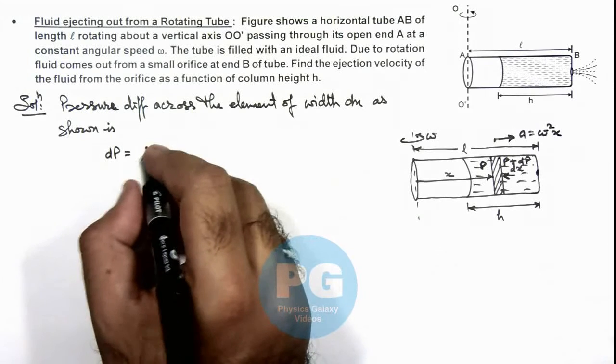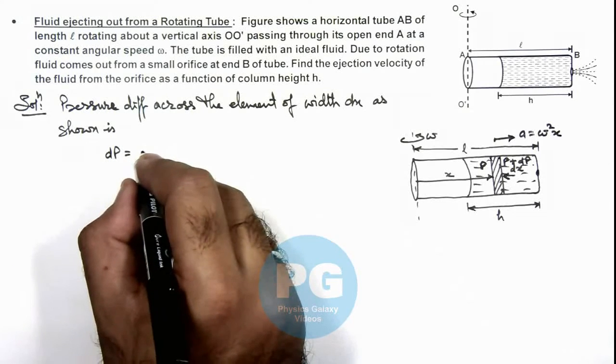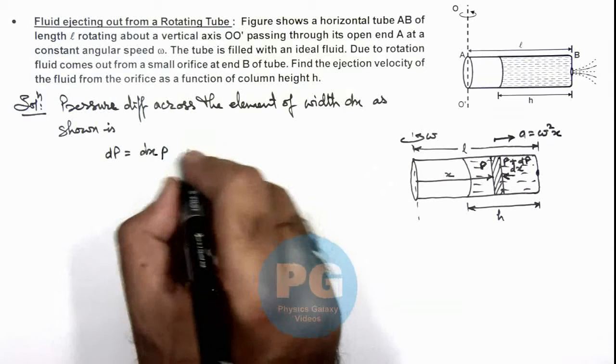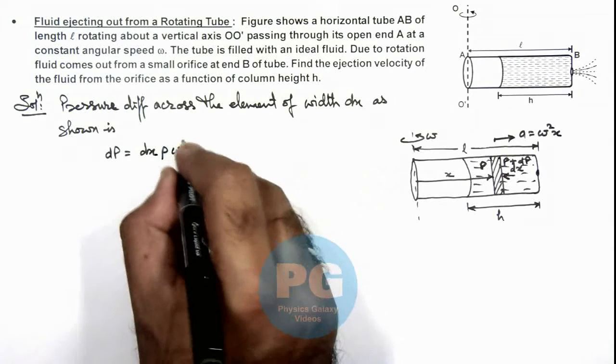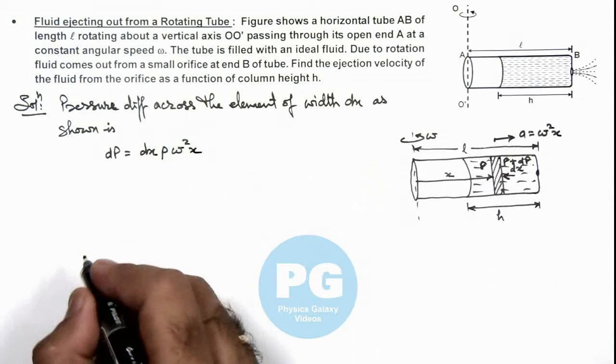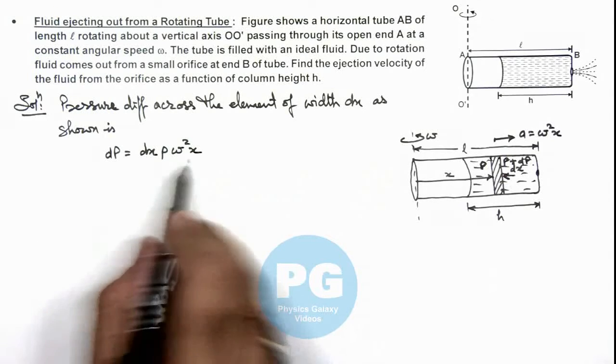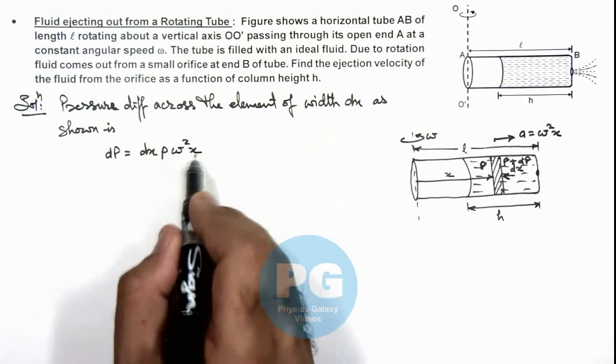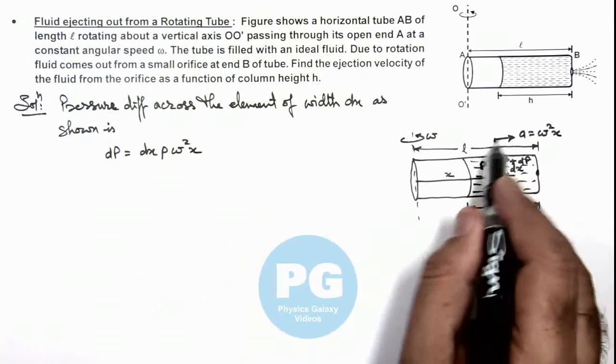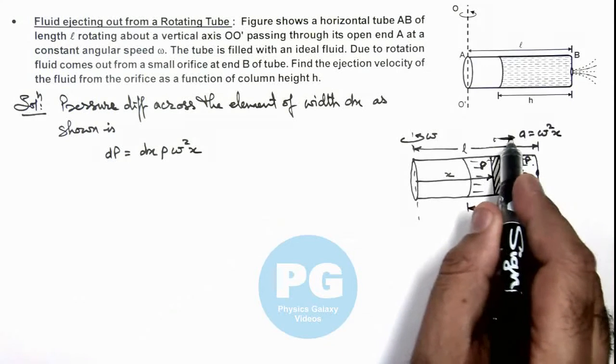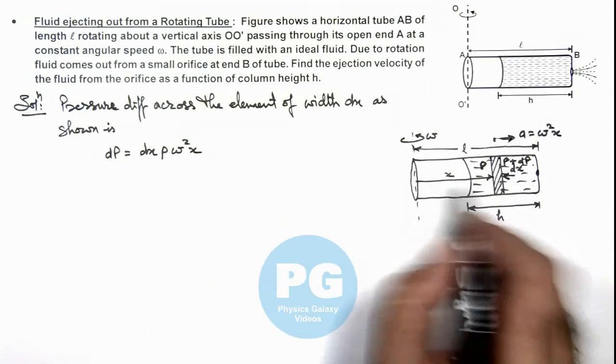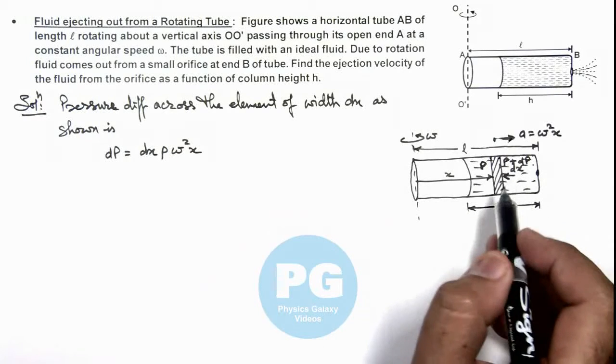So we write dP equals dx times rho times omega squared x. I hope you have got how I have calculated this dP, because in vertical column we consider it dx rho g. Here instead of g I am taking the centrifugal acceleration as effective gravity on this elemental column of width dx in horizontal direction and radially outward direction.